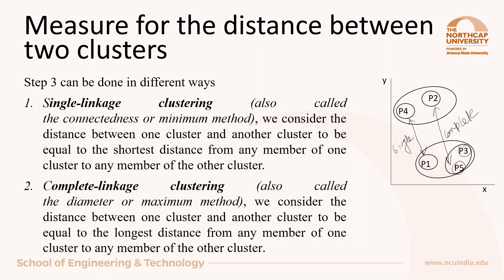The second way is complete linkage clustering. Here we consider the distance between one cluster and another cluster to be equal to the longest distance from any member of one cluster to any member of another cluster. The longest distance, based on the distance matrix, is between P2 and P5. So it is called complete linkage, or the diameter type or maximum method.